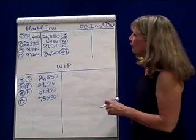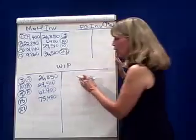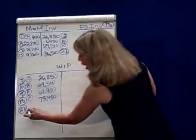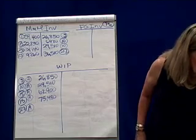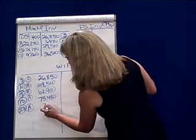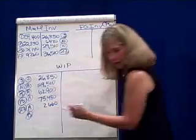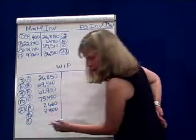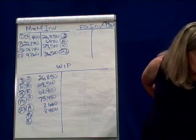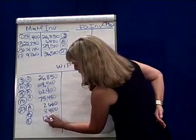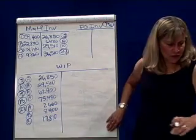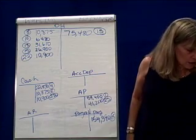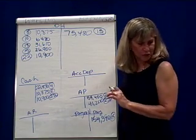And I'm going to debit work in process on the 27th. For Job A, that's going to be $2,660. For Job B, it's going to be $8,400. And for Job C, it's going to be $17,810. That's just some of my debits — I also have to debit overhead for the amount of the indirect materials. The indirect materials on the 27th was $7,640.